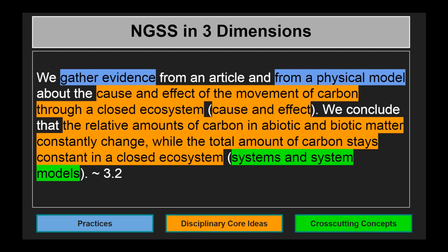In this lesson, we gather evidence from an article and from a physical model about the cause and effect of the movement of carbon through a closed ecosystem. We conclude that the relative amounts of carbon in abiotic and biotic matter constantly change, while the total amount of carbon stays constant in a closed ecosystem.